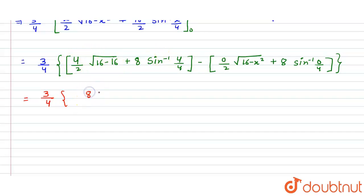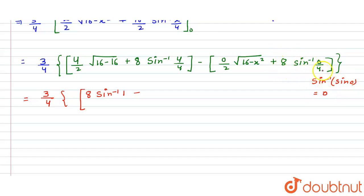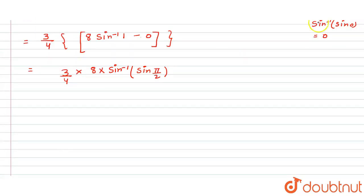So we have (3/4) times [8 sin⁻¹(1) − 0]. We know that sin(π/2) = 1, so sin⁻¹(1) = π/2. This gives (3/4) × 8 × (π/2). Simplifying: 4 cancels with 8 giving 2, so we get 3 × 2 × (π/2), which equals 3π square units. This is the area of one quadrant.